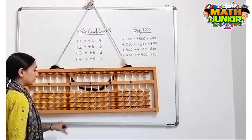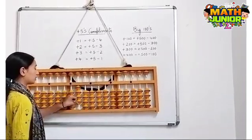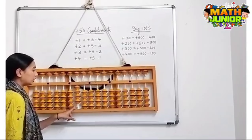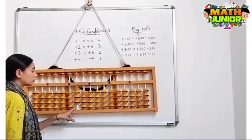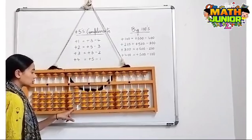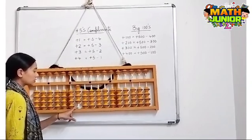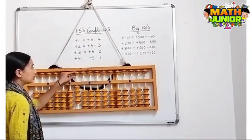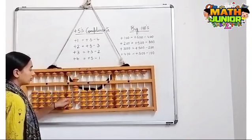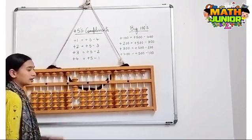Next, I have 400 here and I need to add 400, so the formula for plus 400 is plus 500 minus 100.